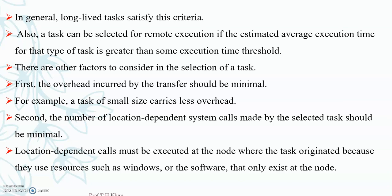There are other factors to consider when selecting a task. First, the overhead incurred by the transfer should be minimal — the sender or receiver should not wait long. Second, the number of location-dependent system calls made by the selected task should be minimal. Location dependency means if the sender has tasks that require a specific application or platform only available at a particular node, then that task cannot be performed by just anyone; it must be performed by that specific node which has that application, environment, or resources. So we need minimum location dependency and minimum delay.